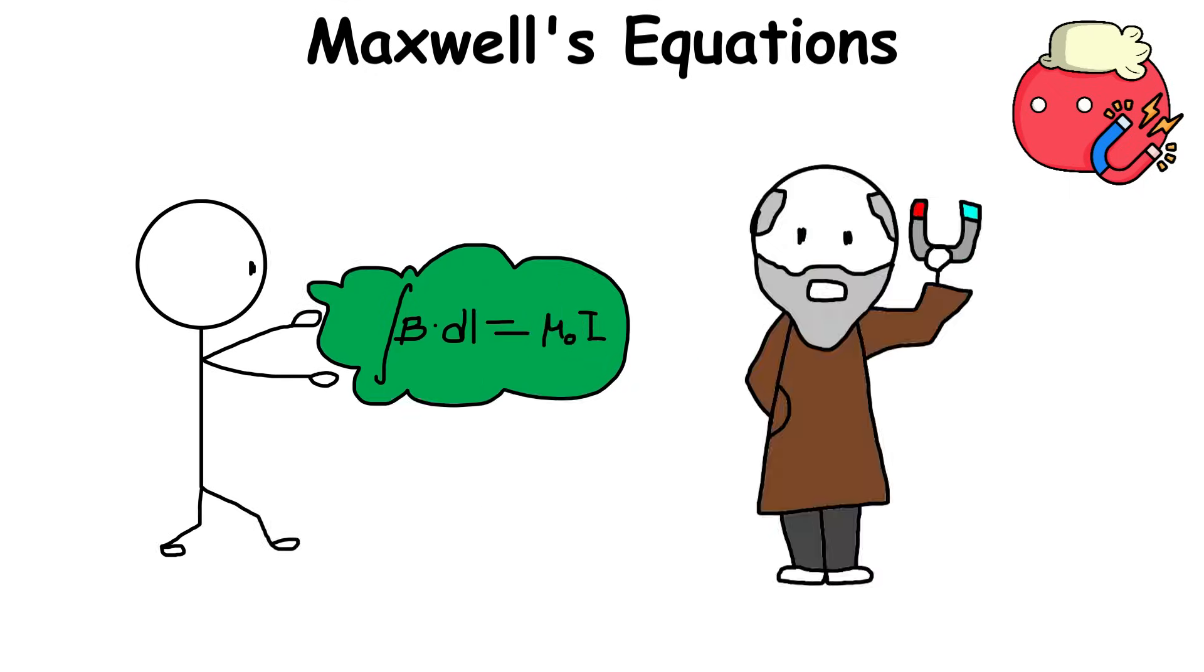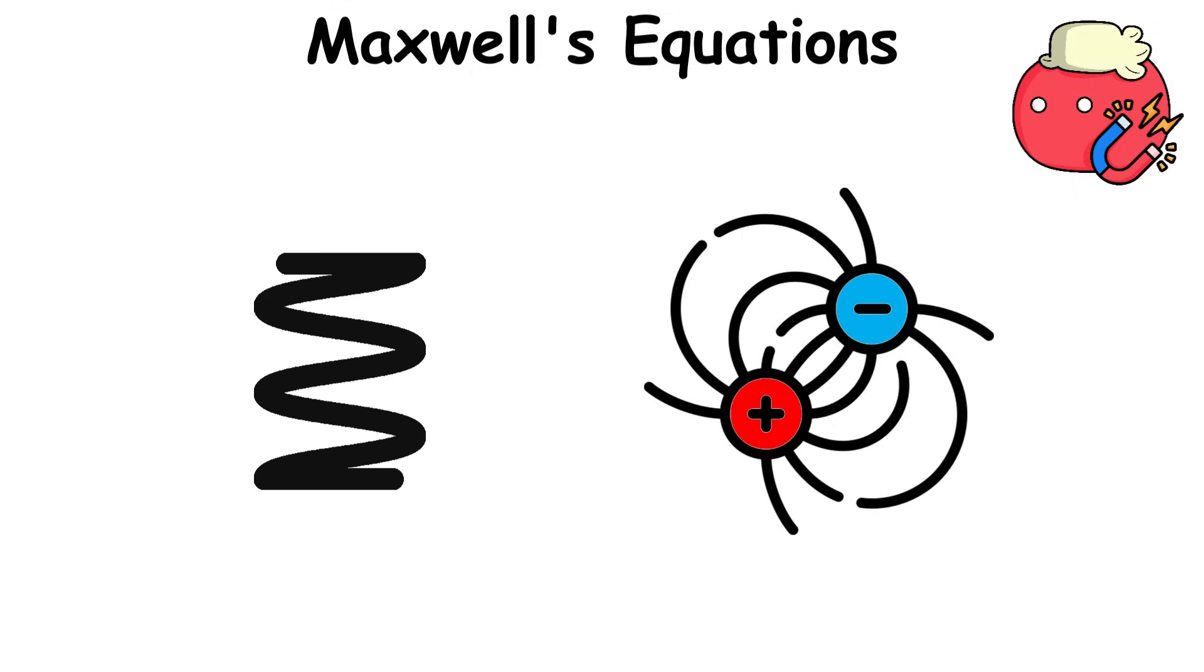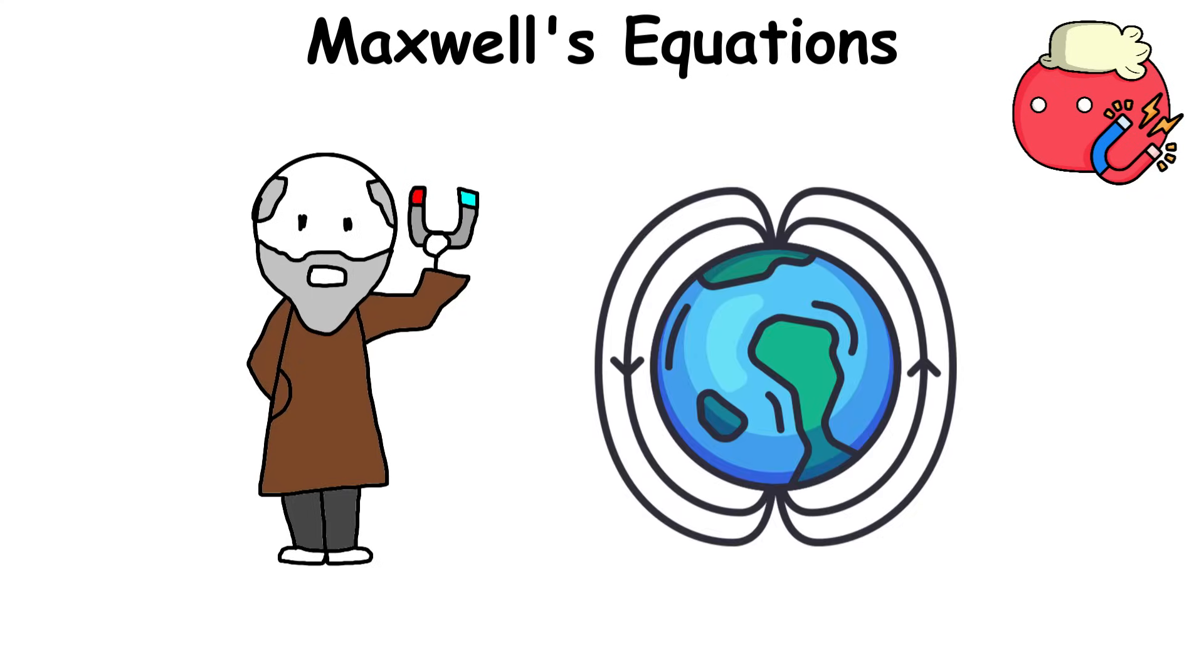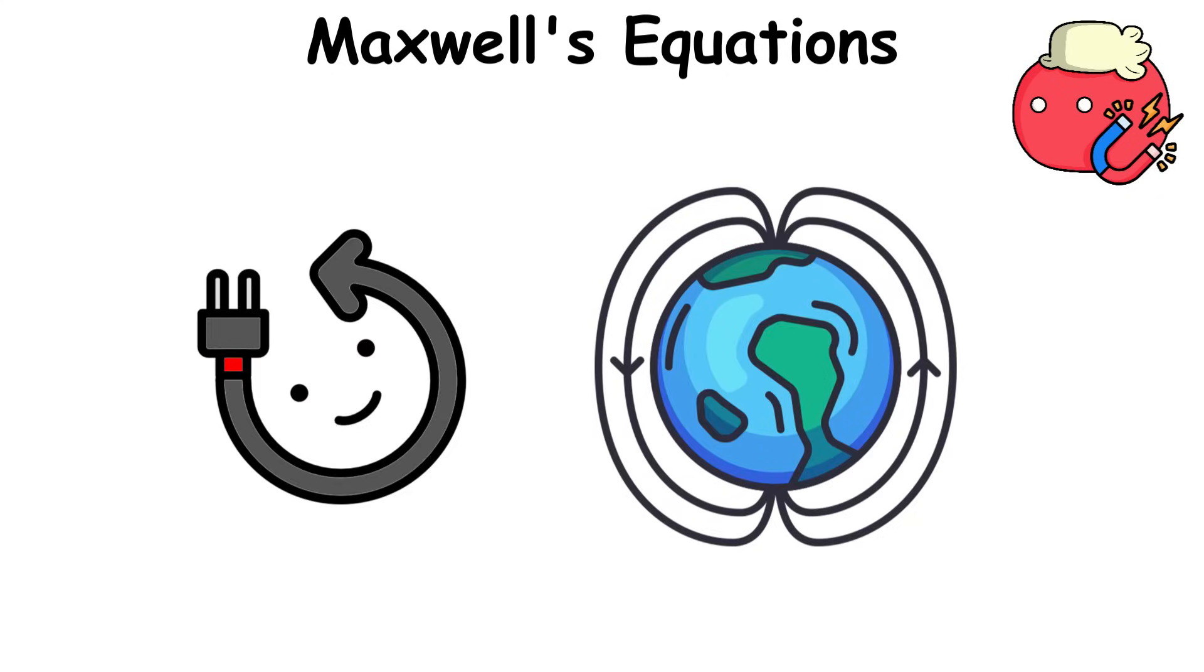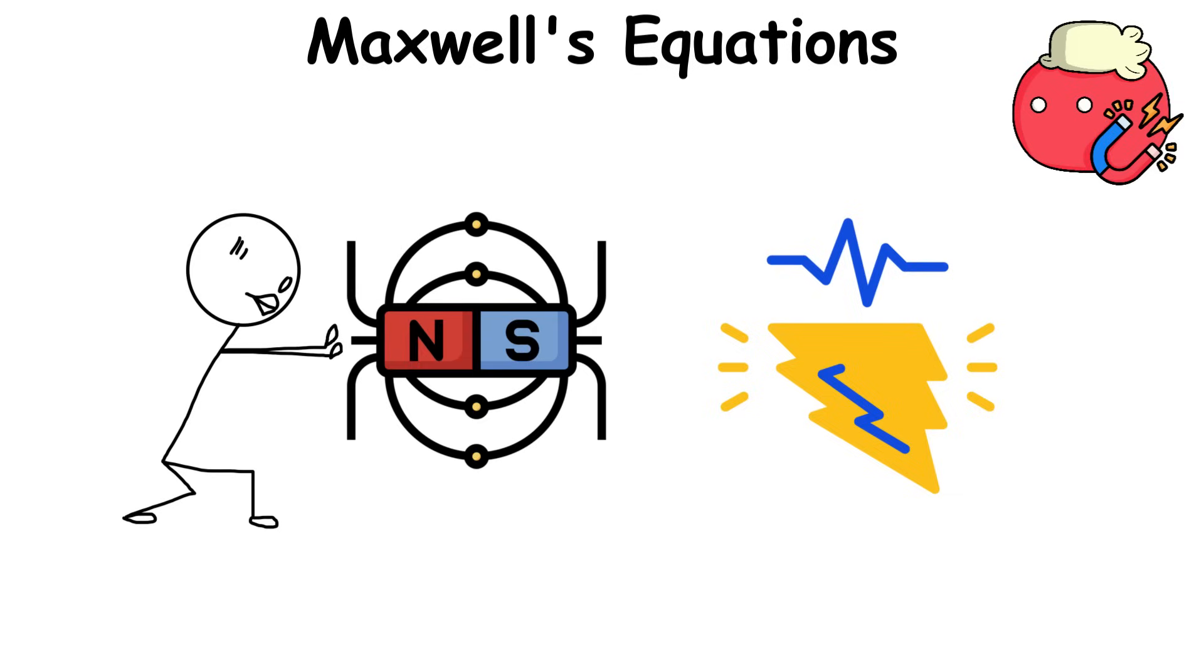Ampere's law, with Maxwell's addition, states that an electric current in one wire can create a magnetic field that loops around it. But Maxwell added that magnetic fields can also be produced by changing electric fields, allowing us to see a bigger picture of how electric and magnetic fields interact.